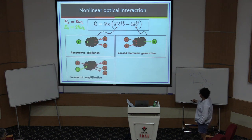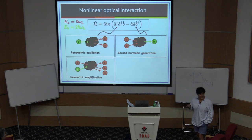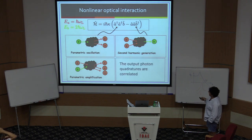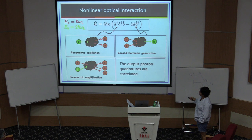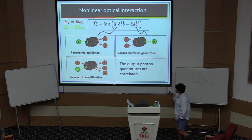Embedded in this Hamiltonian are many other processes — there's parametric amplification where you can take one red and one green and make three reds, a process by which lasing happens. The important thing: because of this coupling constant kappa, the output photons are correlated. These two red photons were born from a single quantum mechanical process, so their properties are correlated — otherwise known in quantum language as entangled. So we use a device that can have a Hamiltonian like this.